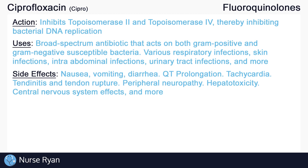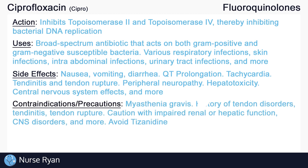Fluoroquinolones should be avoided in those with myasthenia gravis, as they may exacerbate muscle weakness in this population. Also avoid fluoroquinolones in those who have a history of tendon disorders or those who have experienced tendinitis or tendon rupture. Patients who are above 60 years old, patients taking corticosteroids, and patients with heart, kidney, or lung transplants have an increased risk for tendinitis or tendon rupture. Use cautiously in those with impaired renal or hepatic function, those with CNS disorders, and more.